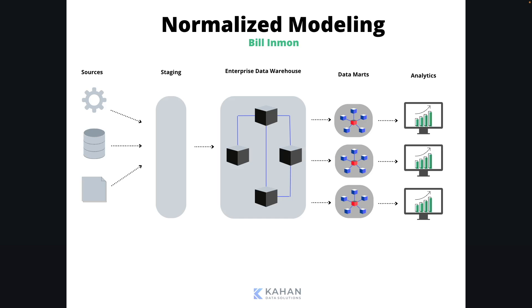There are technically a million different ways you could go about modeling your data, but we're going to talk about four of the most common approaches. First up, we have what I'm calling normalized modeling, made famous by Bill Inmon, and it's been around for a long time. In this scenario, you have your sources followed by a staging layer, and this warehouse is designed to mimic the actual source systems itself. It's all normalized, meaning there's no data redundancy, and there are typically a lot of joins involved to get a final result.